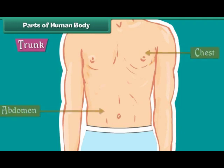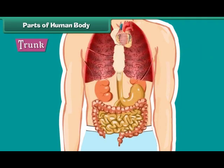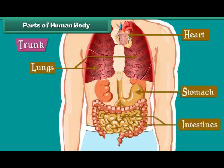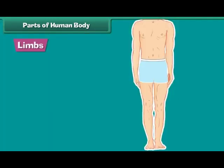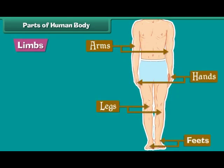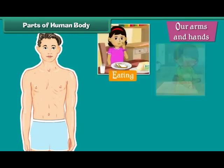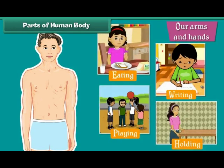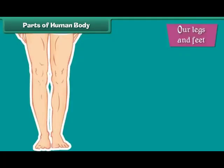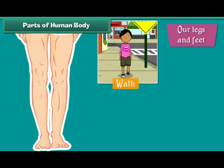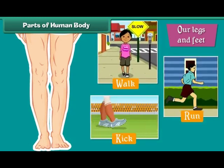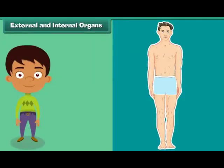Many important organs such as the heart, lungs, stomach, intestines, and kidneys are located inside the trunk. Limbs consist of a pair of arms, hands, legs, and feet. Our arms and hands assist us in eating, writing, playing, holding, and lifting things. Our legs and feet help us to walk, run, kick, and dance.